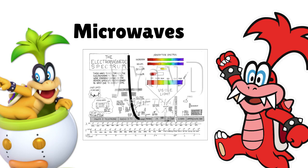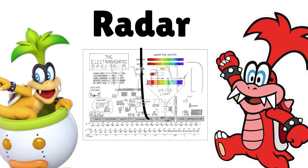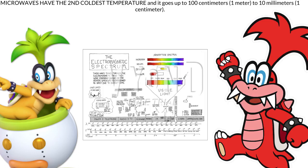Belonging to a microwave, a radar wave is a wave that determines the range, angle, or velocity of objects. It can be used to detect aircraft, ships, spacecraft, guided missiles, motor vehicles, weather formations, and terrain. It can go up to 24.2 gigahertz and have a wavelength up to 12.4 millimeters, having the energy of 10 microelectron volts. Microwaves travel by line of sight. Unlike lower frequency radio waves they do not diffract around hills, follow the Earth's surface as ground waves, or reflect from the ionosphere. So terrestrial microwave communication links are limited by the visual horizon to about 40 miles, or 64 kilometers. At the high end of the band they are absorbed by gases in the atmosphere, limiting practical communication distances to around a kilometer.